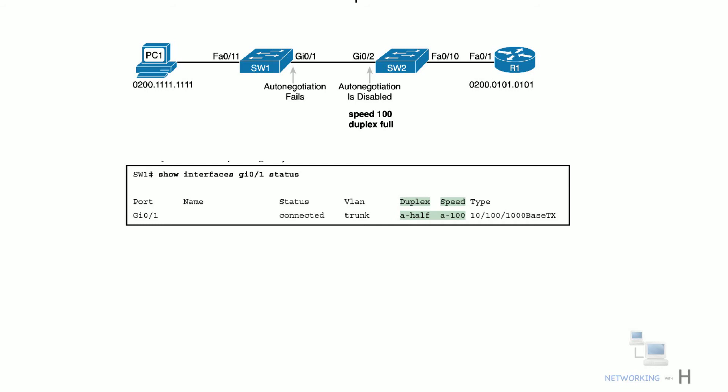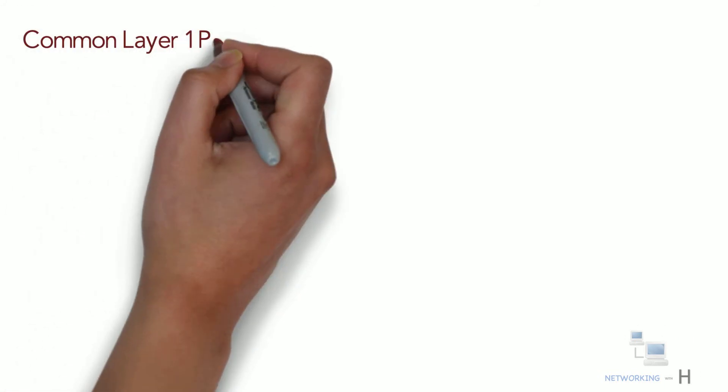Even though Switch 1 had to use an auto-negotiation default, the show interface command still shows the speed and duplex with an 'a-' prefix. Switch 2's port was manually set to 100/full, so Switch 1 also runs at 100 Mbps. However, the auto-negotiation rules tell Switch 1 to use half duplex, as shown in the output. To identify duplex mismatch problems, always check the duplex settings on each end of the link to see if the values mismatch.